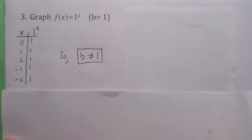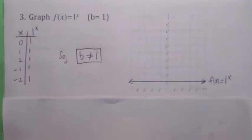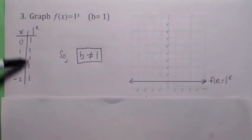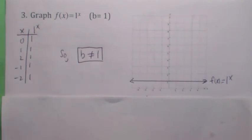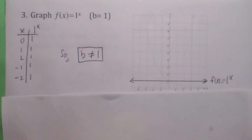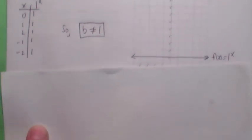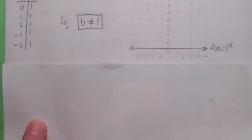So why can't the base equal 1? If the base equals 1, then you have 1 to the x, which turns out to be a horizontal line — the y value is always 1. It's not 1-to-1, so we don't allow it. We're going to be looking at the inverse functions pretty soon, so we want them to be 1-to-1.